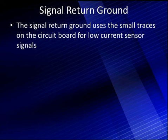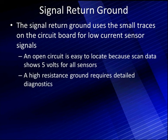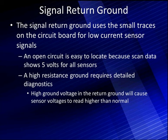The signal return grounds are very important. As we said before, there are small traces on the circuit boards for low current sensor signals. An open circuit is easy to locate because scan data shows 5 volts on all the sensors that use that ground. A high resistance ground requires more detailed diagnostics — there won't be the same voltages, but you're going to see the same pattern. Everything is going to be off the same amount, and you won't be able to get zero. High ground voltage returns will cause sensor voltages to read higher than normal.